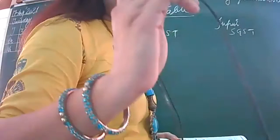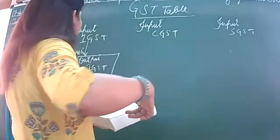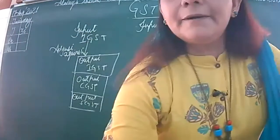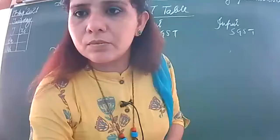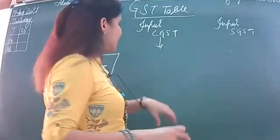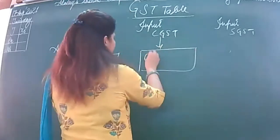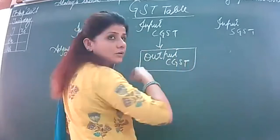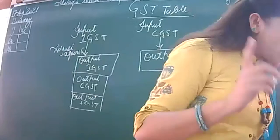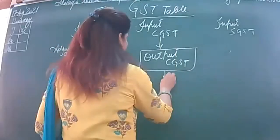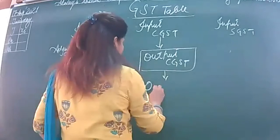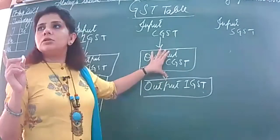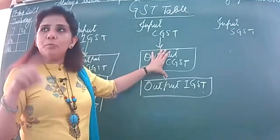Now let's see how to adjust it. Input CGST is firstly to be adjusted against output CGST. If output is greater than input, we will pay. If input is greater, we will carry forward.